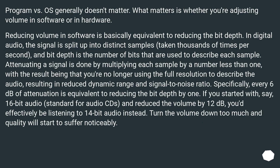Program versus OS generally doesn't matter. What matters is whether you're adjusting volume in software or in hardware. Reducing volume in software is basically equivalent to reducing the bit depth. In digital audio, the signal is split up into distinct samples taken thousands of times per second, and bit depth is the number of bits used to describe each sample. Attenuating a signal is done by multiplying each sample by a number less than one, resulting in reduced dynamic range and signal-to-noise ratio. Every 6 dB of attenuation is equivalent to reducing the bit depth by one.